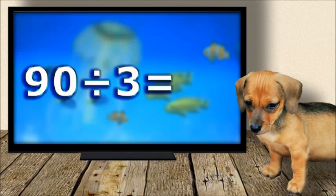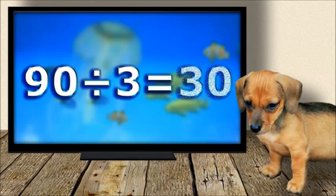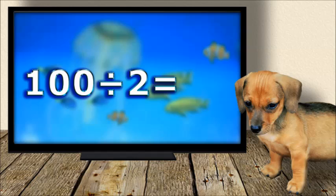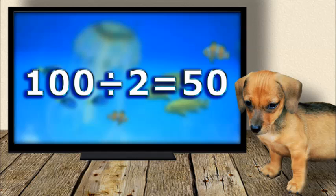Ninety divided by three equals thirty. One hundred divided by two equals fifty.